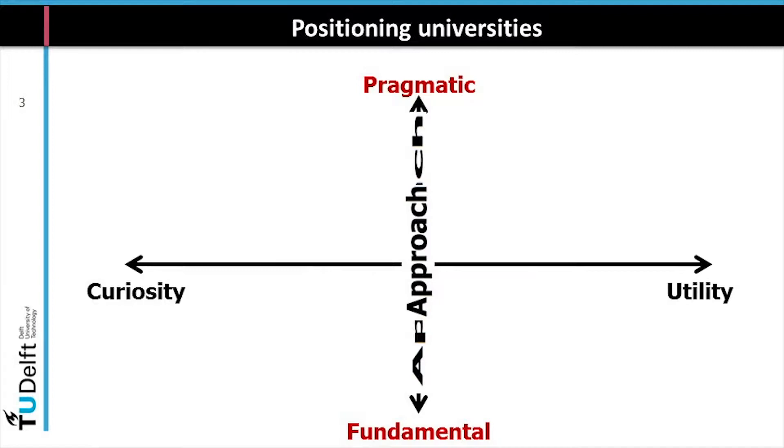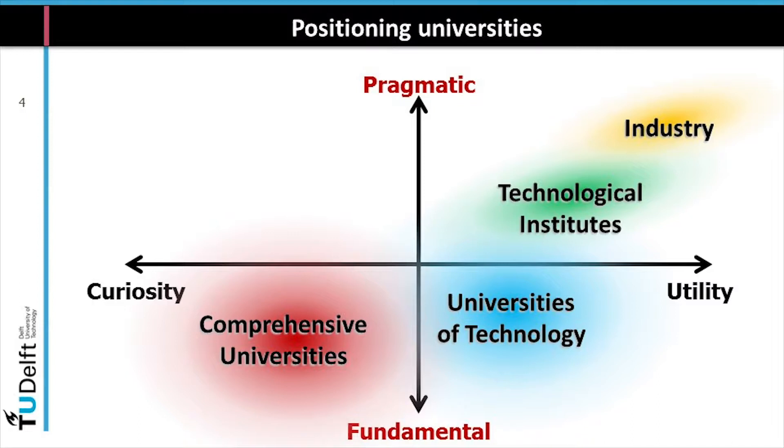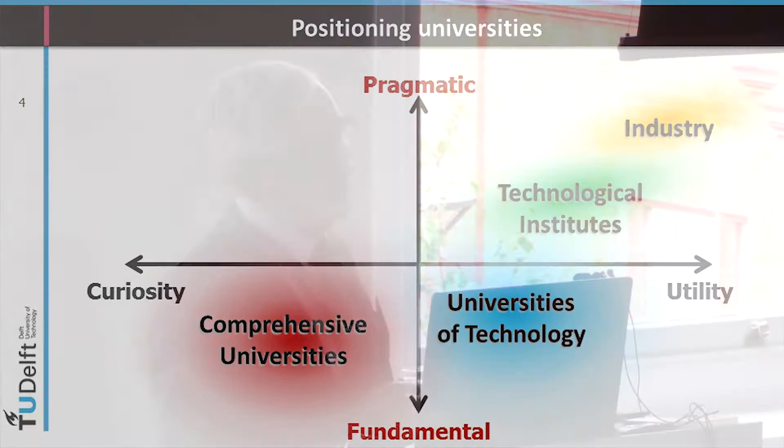The other dimension you should look at is how do you approach this question. I realize these are not completely independent axes and not a completely orthogonal system, but looking at it this way can be very helpful. One approach could be a very fundamental one, irrespective of the question, and the other approach could be a very pragmatic one. If you make these four quadrants you could position the different types of universities: the comprehensive universities, the technological universities, the technological institutes, and closer to the pragmatic approach, industry.